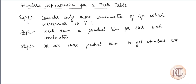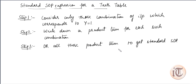Hello friends, in this video we are going to discuss how we write a standard SOP expression for a given truth table. There is a procedure to be followed: Step 1 is to consider only those combinations of input which correspond to y equals 1, where y is the output. Step 2 is to write down a product term for each such combination where y equals 1. Step 3 is to OR, or add, all these product terms to get the standard SOP expression.